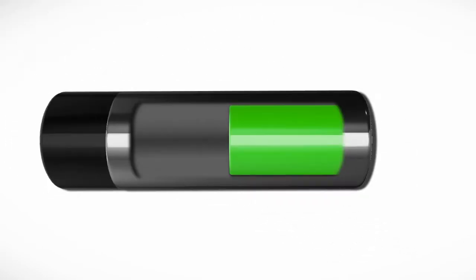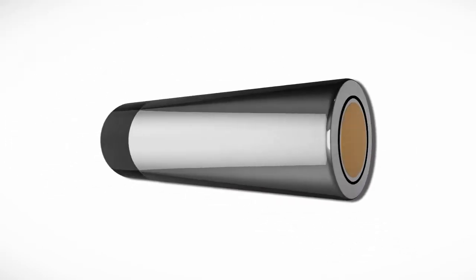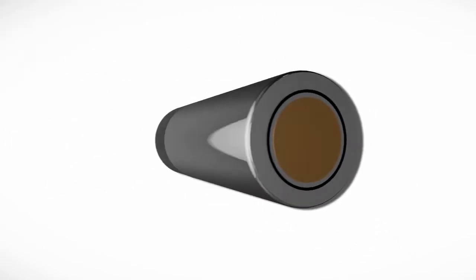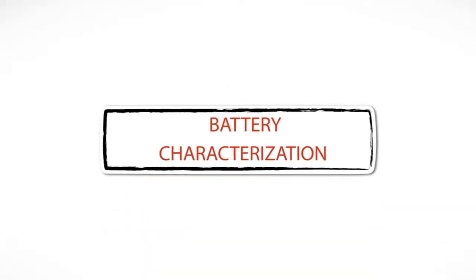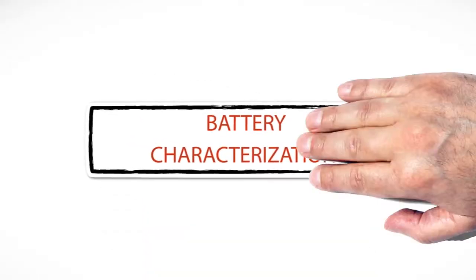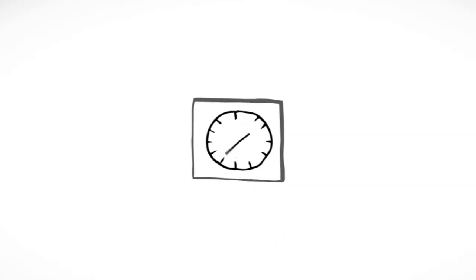An accurate battery model also results in safer battery charging and discharging. But creating a customized battery model, also known as battery characterization, can be a lengthy process that typically must be done by the chip manufacturer.